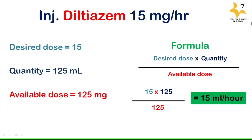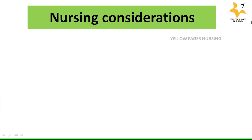The calculation will be very easy if the drug is prepared as mentioned in the standard infusion — with five vials of injection diltiazem diluted in 100 ml of normal saline. Next come the nursing considerations.